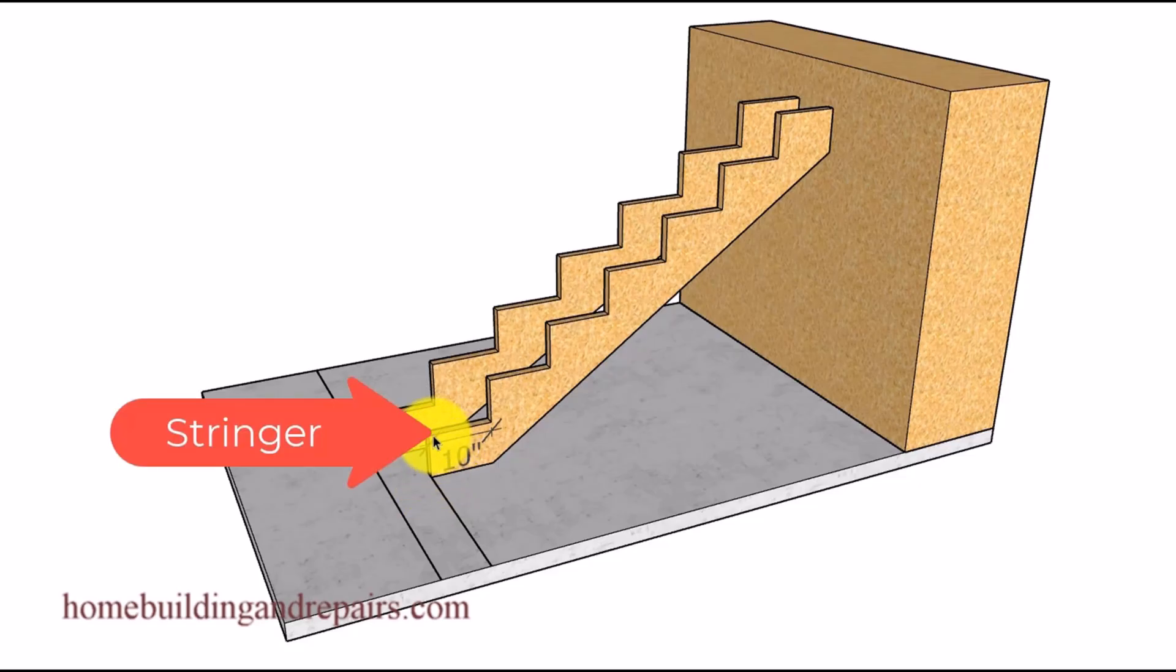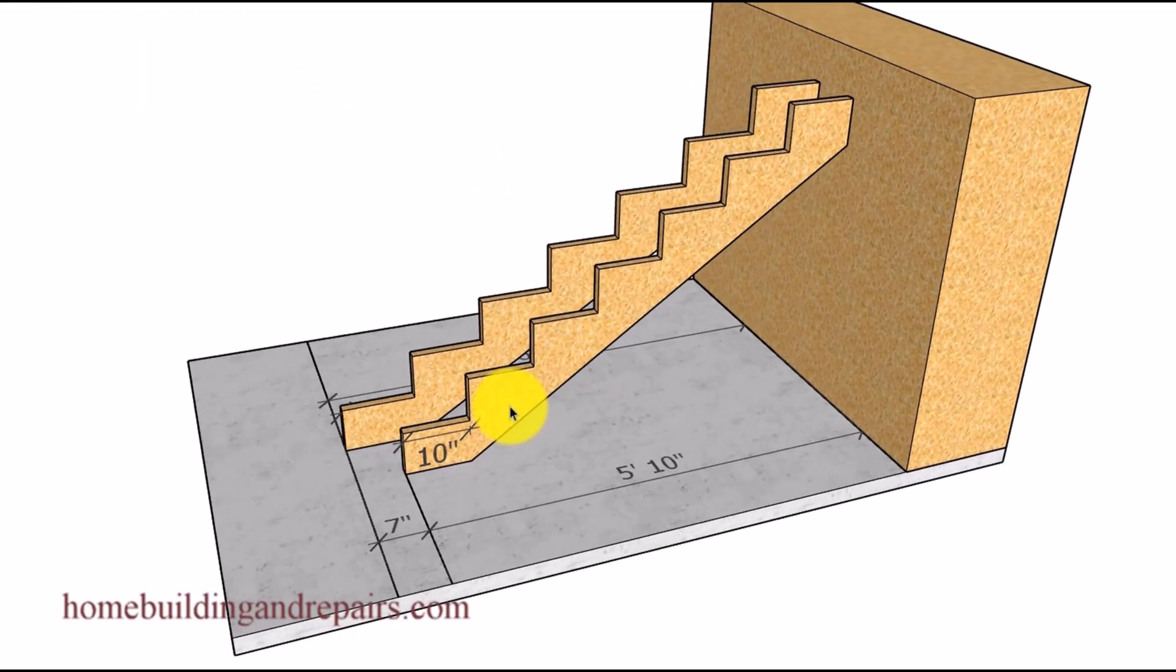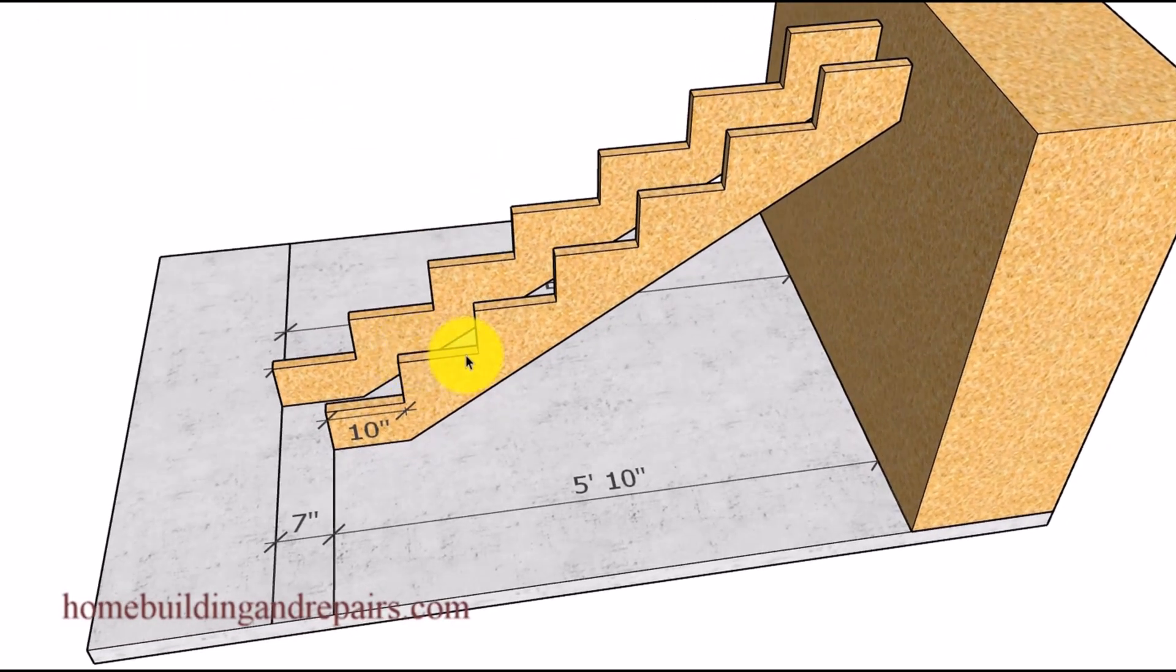Our original tread length is going to be 10 inches and our treads are going to be 11 inches long to provide us with a one inch nosing. Over here we have a 10 inch stair tread, seven of them, and then on the other side we have an 11 inch stair tread with a seven inch difference between the two of them, providing us with a little longer stringer.